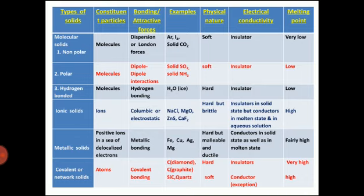Examples of ionic solids: sodium chloride, magnesium oxide, zinc sulfide, calcium difluoride. Physical nature: hard but brittle. Electrical conductivity: ionic solids in solid state are insulators, whereas in molten state they conduct electricity. Melting point: very high, because of strong electrostatic force of attraction between the ions.